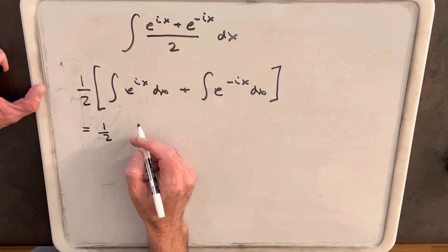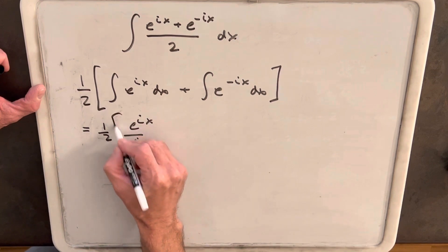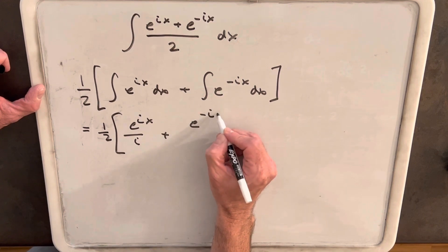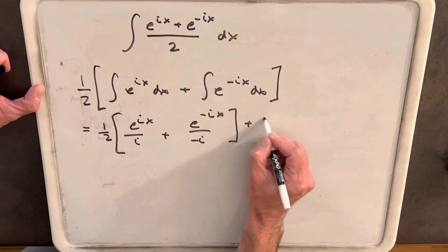So we'll have e to the ix over i, and then for the second one, we'll have e to the negative ix over negative i plus c.